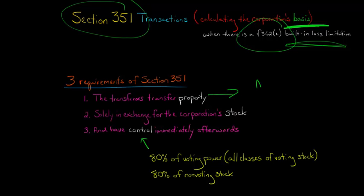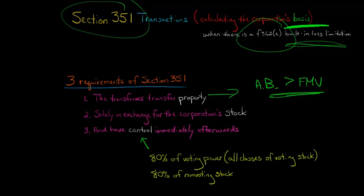You look at the aggregate adjusted basis — meaning you add up the adjusted basis of each property being transferred to the corporation, and then add up the fair market values of each property. If the adjusted basis exceeds the fair market value — let's say it exceeds it by $25 — then you're going to have a built-in loss limitation of $25 that needs to be allocated in order to reduce some of the basis of the property the corporation is receiving.